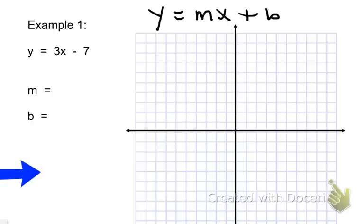If we're in slope-intercept form, then m and b, our slope and our y-intercept, are very easy to identify. m, our slope, is always the number that is sitting directly in front of our x. In this equation, our slope is 3.